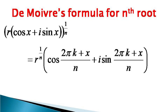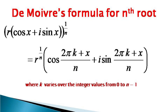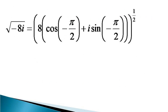Here the value of k varies over integer values from 0 to n minus 1. So for the nth root, we get n values of the root. In our present problem, we will use De Moivre's formula for the nth root.